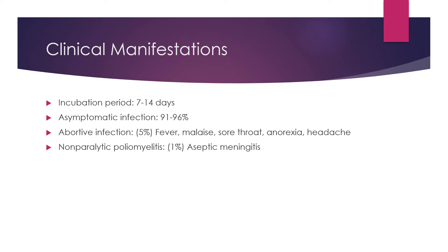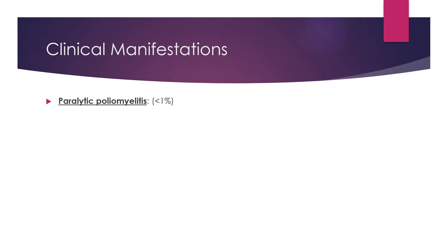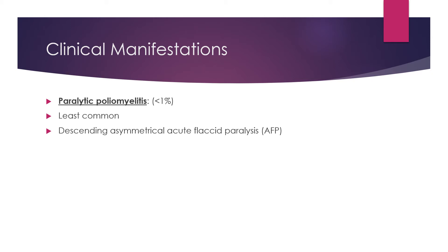Non-paralytic poliomyelitis is seen in about one percent of patients, presenting as aseptic meningitis. The most severe form is paralytic poliomyelitis, occurring in less than one percent of cases. It is characterized by descending asymmetrical acute flaccid paralysis (AFP). Proximal muscles are mostly affected earlier than distal muscles; paralysis starts at the hip and proceeds toward the extremities.